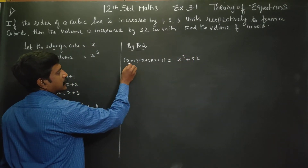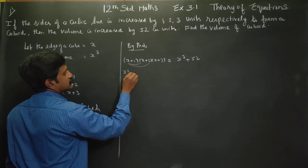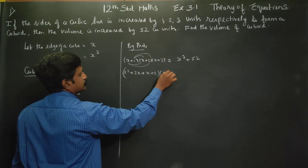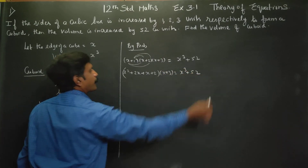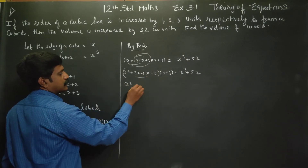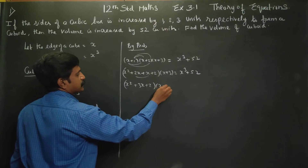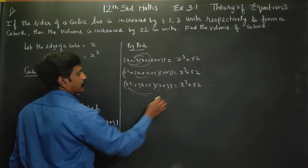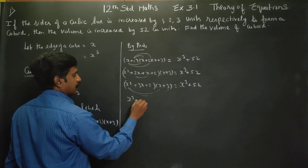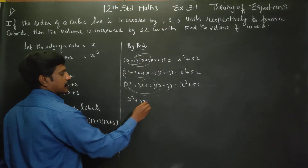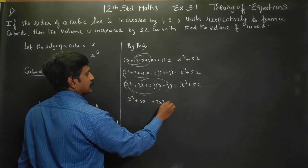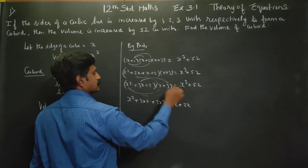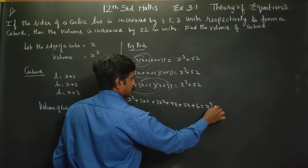I am going to multiply this out. x² + 2x + x + 2 gives (x+1)(x+2) = x² + 3x + 2. Then multiplying by (x+3): x³ + 3x² + 2x + 3x² + 9x + 2x + 6 equals x³ + 52.